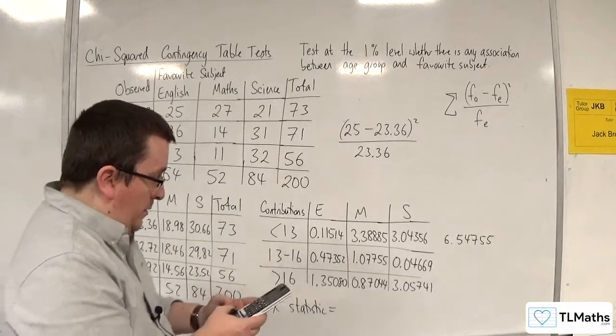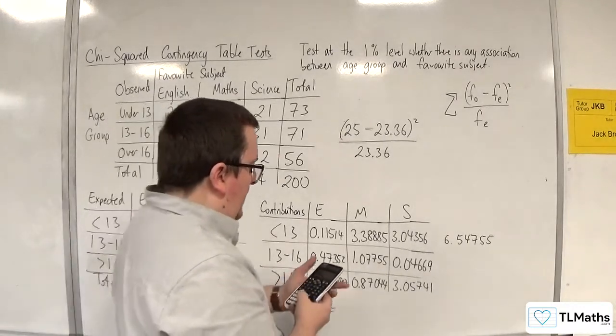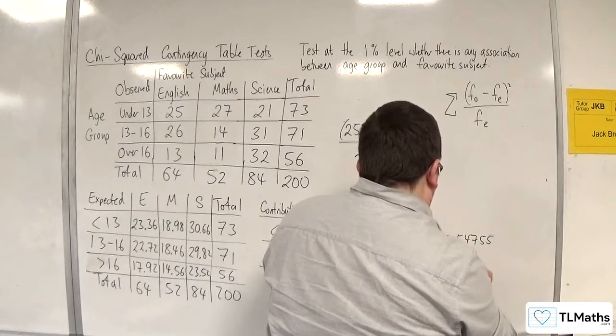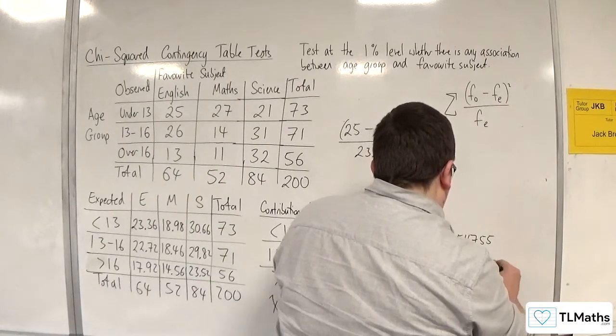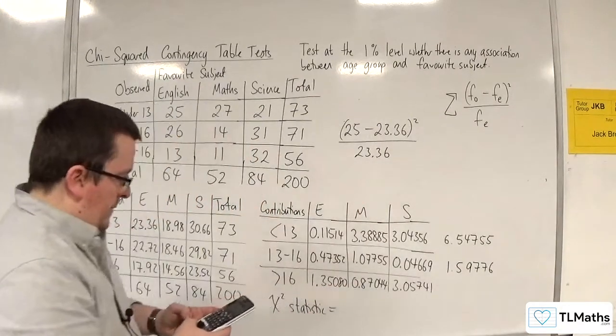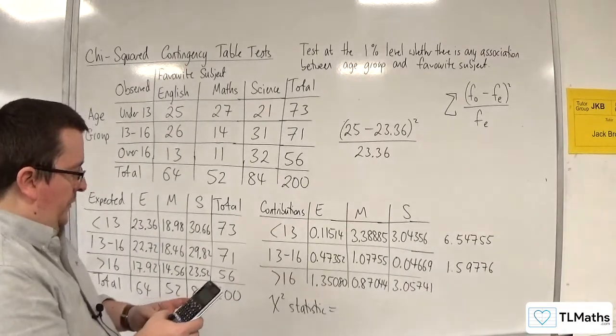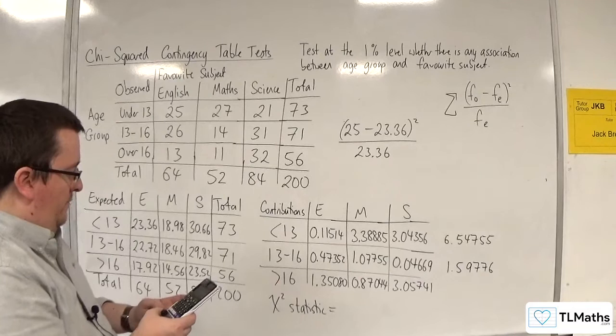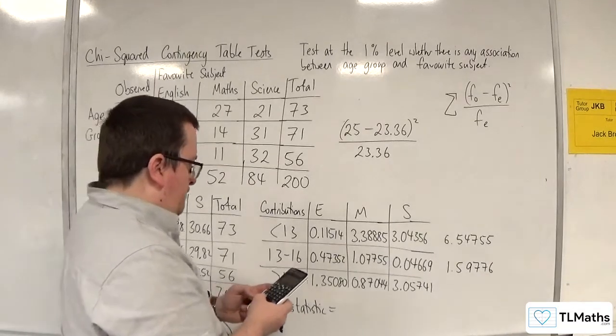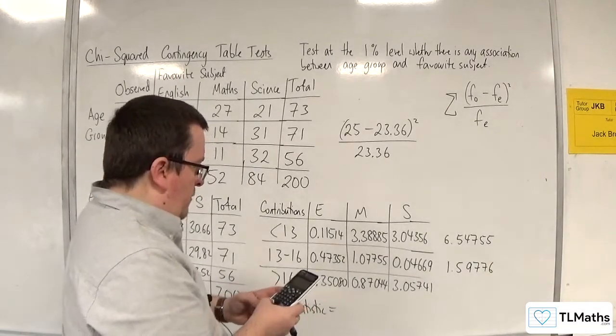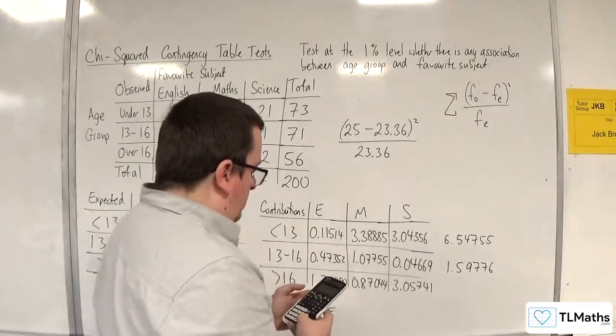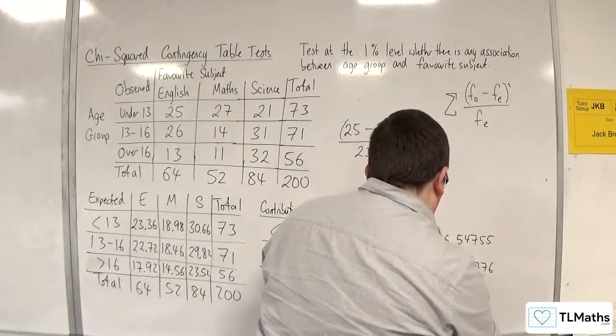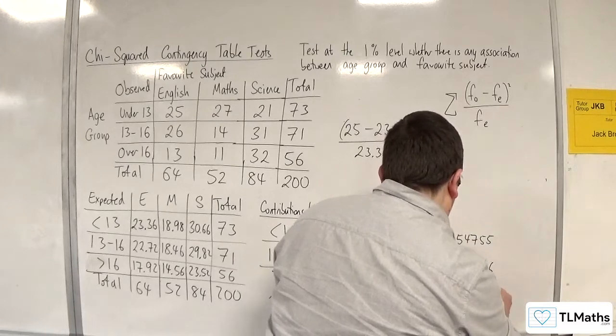Okay, so it breaks it up, hopefully meaning I make less errors. The next one is 1.59776. Then we get 1.35080 plus 0.87044 plus 3.05741. So 5.27865.